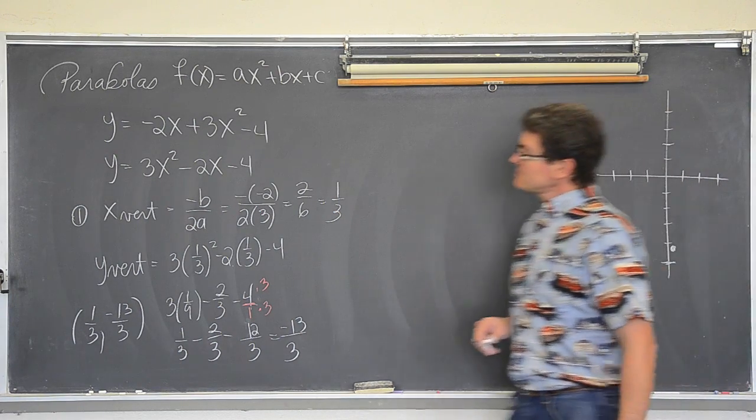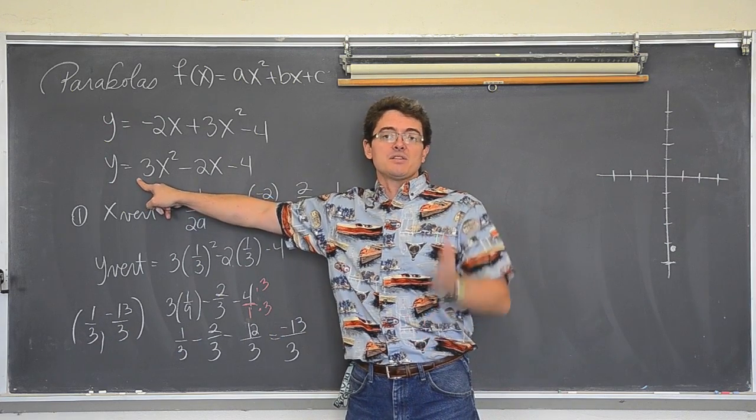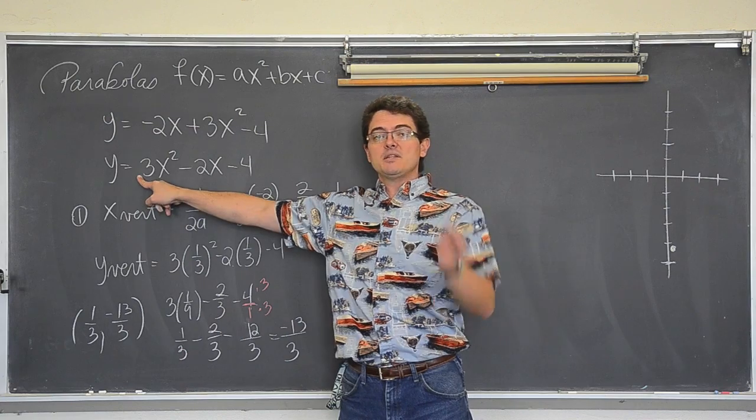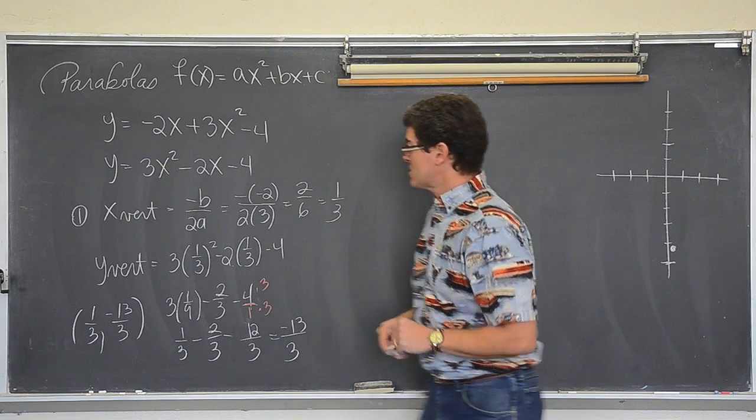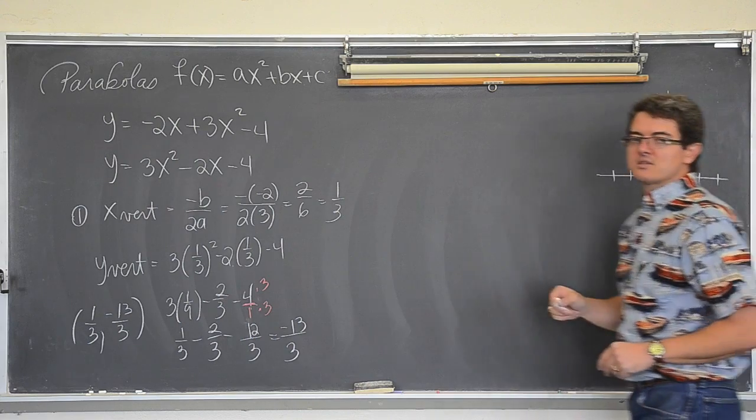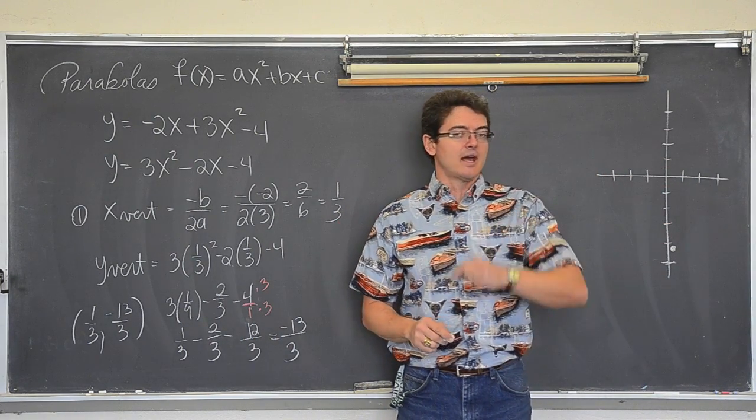Now you see this leading coefficient. When our leading coefficients are positive our parabolas are going to open up. If this 3 were negative it would open down. So I know that my parabola is now going to go up from here. What other points could we easily find to help us graph this parabola, not just a sketch?